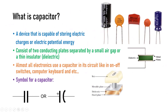So what is actually a capacitor? As you can see, this is how a capacitor looks like. It's a device that is capable of storing electric charges or electric potential energy. It consists of two conducting plates — two metal plates that are separated by a small air gap or a thin insulator that we call a dielectric. Almost all electronics use a capacitor in their circuit, like in on-off switches, computer keyboards, and so on. This is an example of how a capacitor looks inside a computer keyboard.